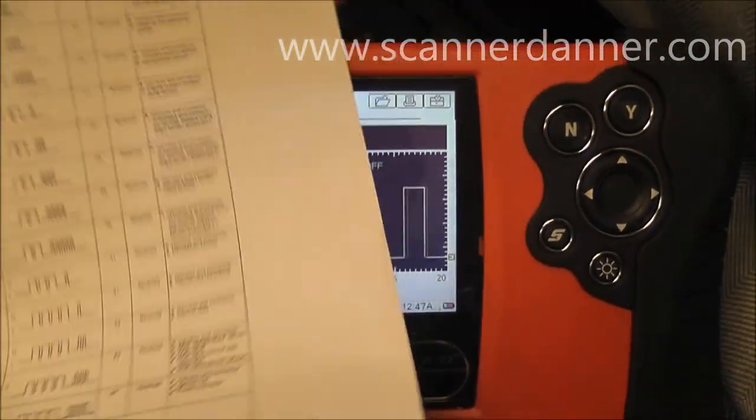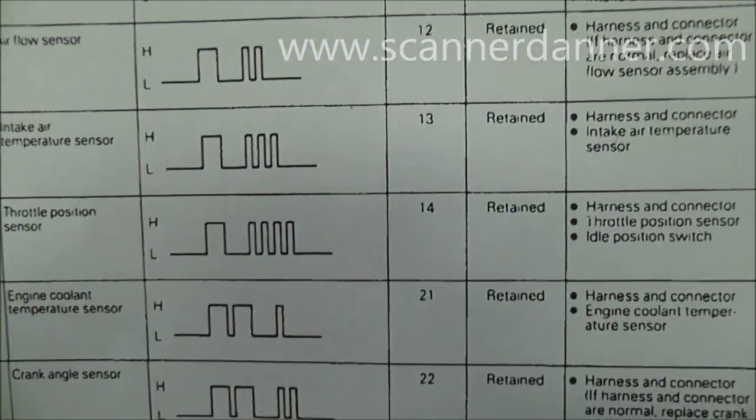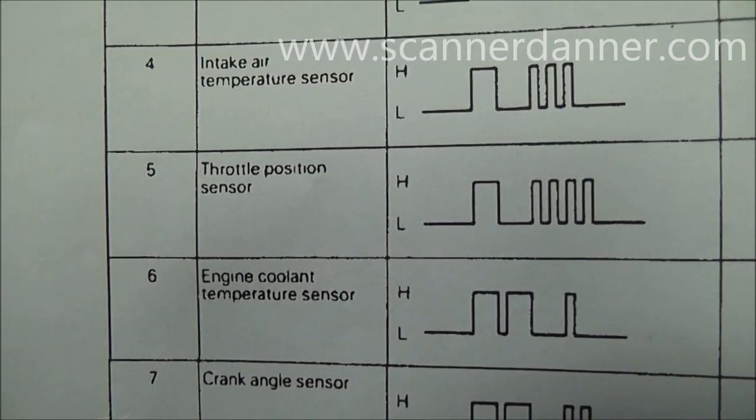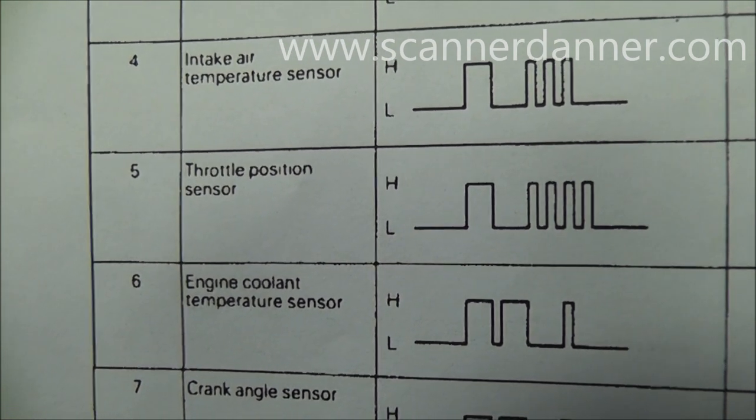If we look up what a code 14 is on our chart, code 14 is our throttle position sensor circuit. And so we're going to go under the hood now, take a look at the throttle position sensor.